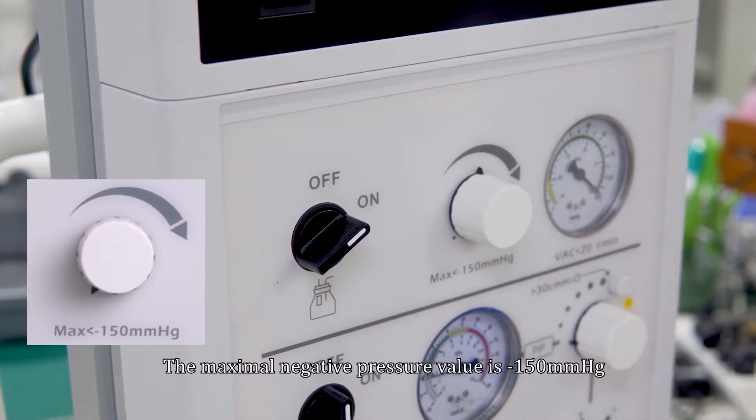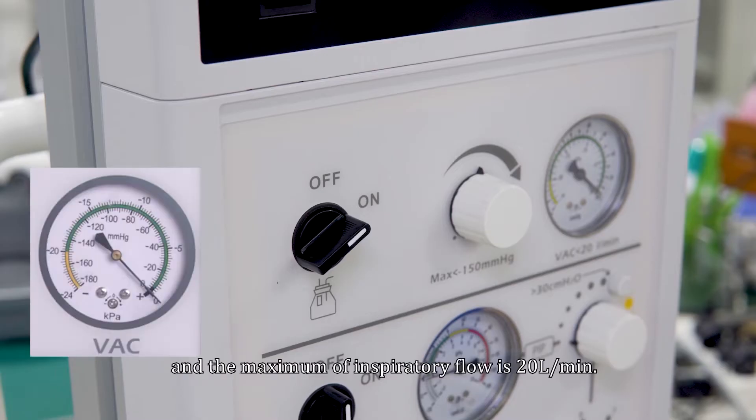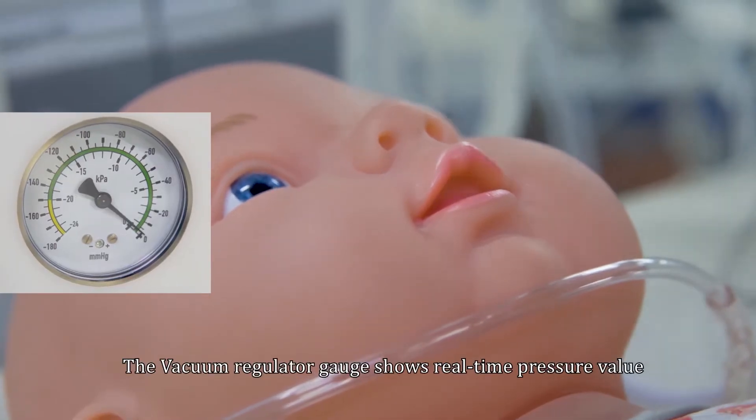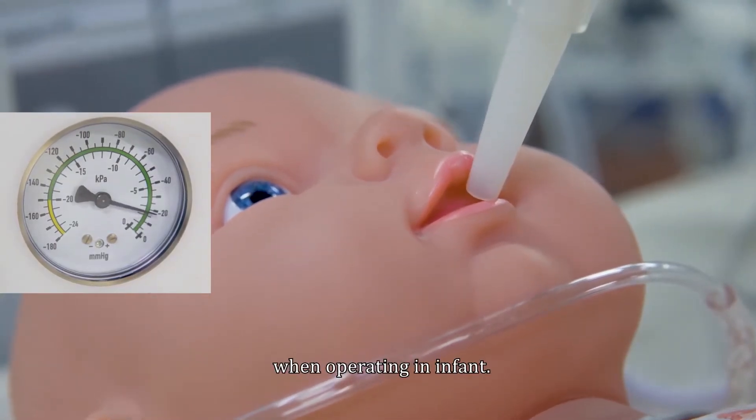The maximal negative pressure value is minus 150 millimeters of mercury, and the maximum inspiratory flow is 20 liters per minute. The vacuum regulator gauge shows real-time pressure value when operating an infant.